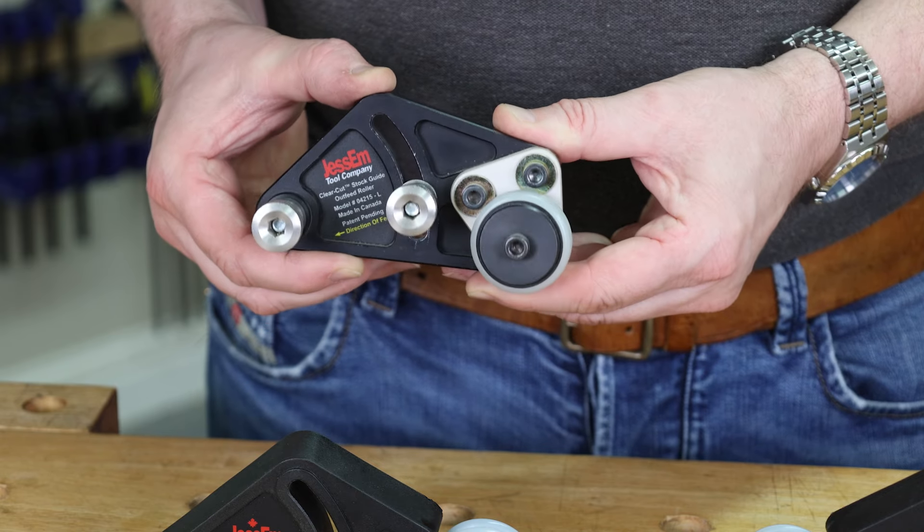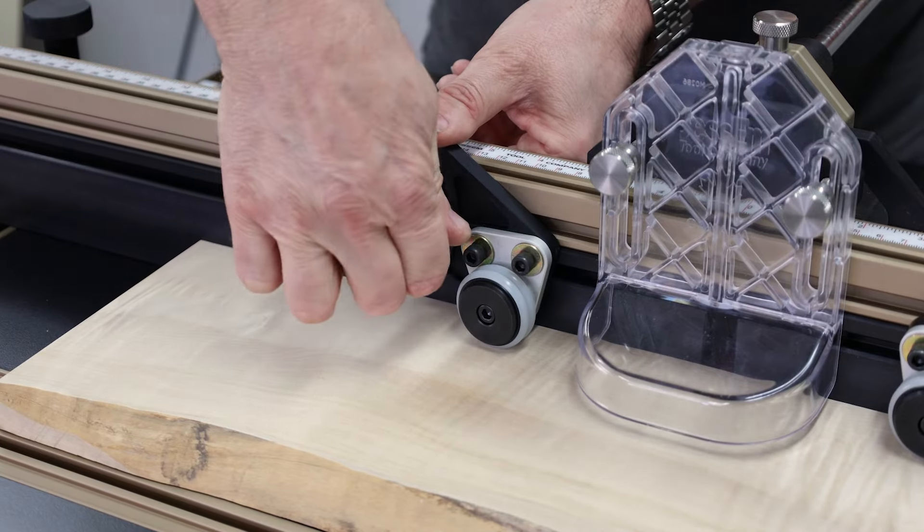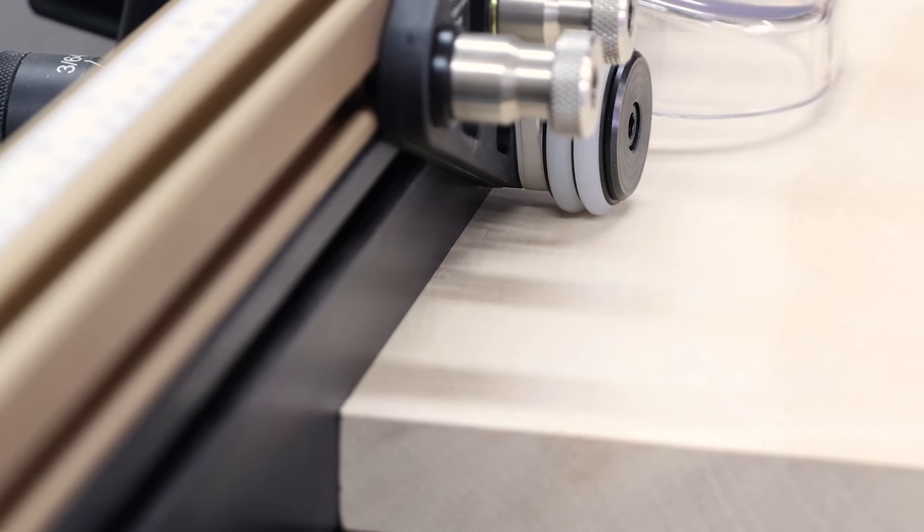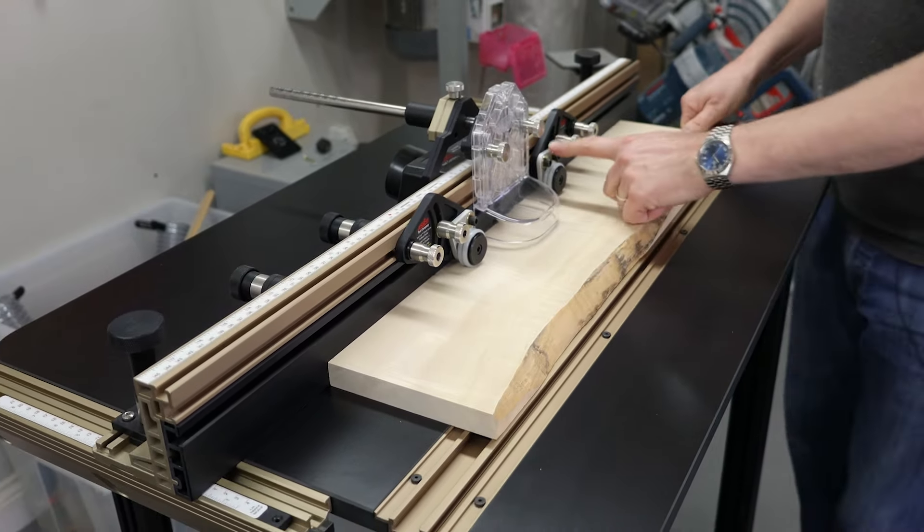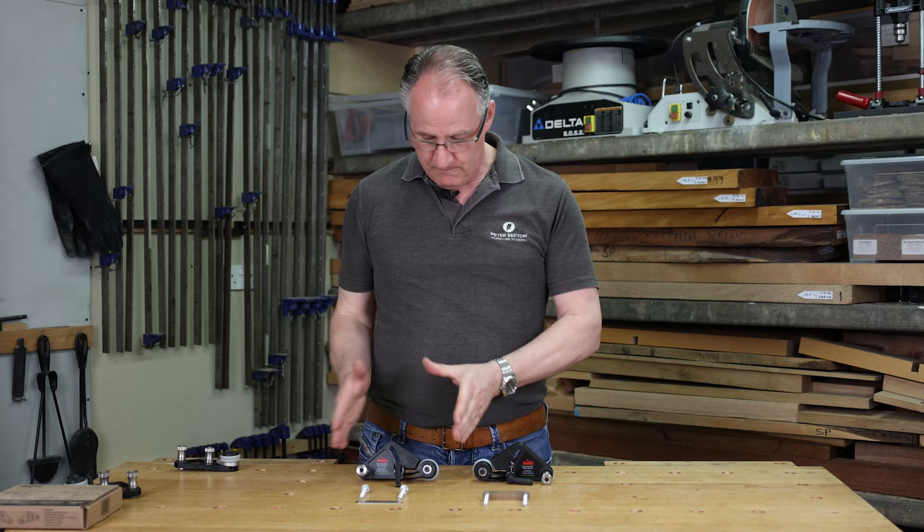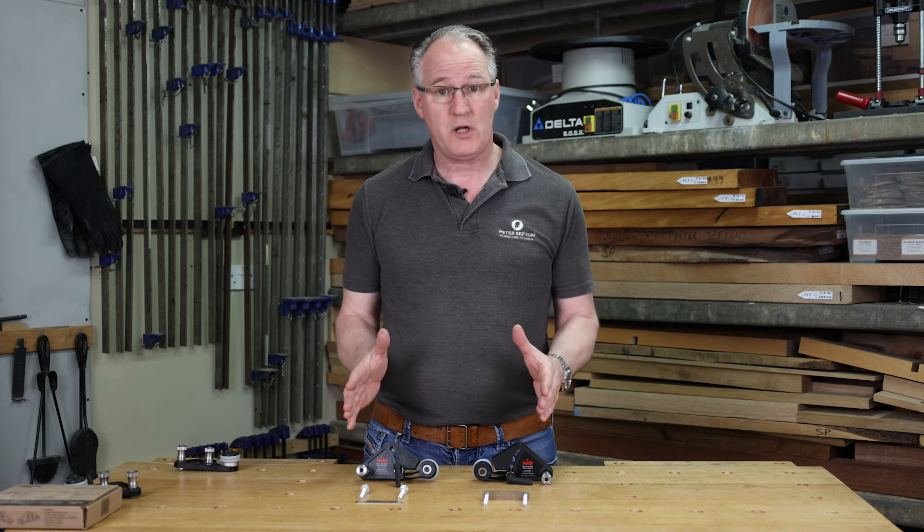Our standard Clear-Cut Stock Guides, ones I've had for years, are a really nice cast body but these do not allow for any flex. These are perfect for the router table. The flex stock guides can be used on a small table saw, contractor saw or also a router table.